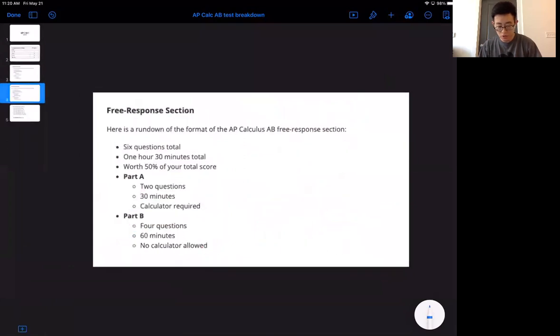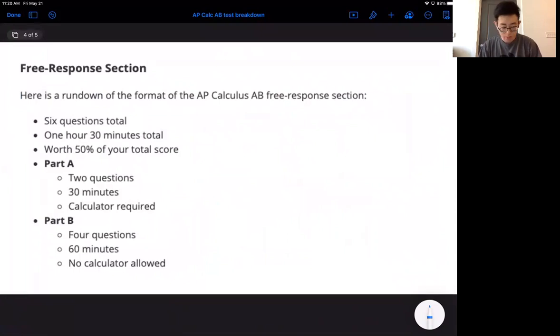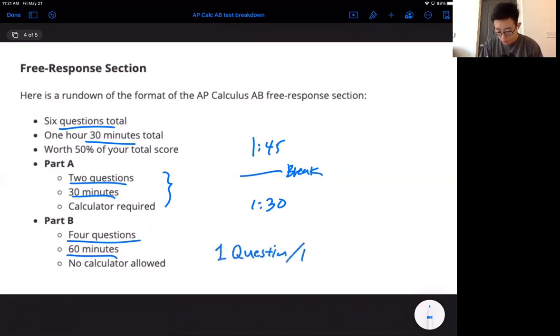Then you move into the open-ended sections, the free response questions, which is actually very crucial. Here's a rundown: six questions in total. That doesn't seem like much, but every question is very elaborate. One hour and 30 minutes long total. You'll be spending about four hours just like an SAT on this entire exam. Part A is two questions in 30 minutes, and calculator is required. They will give you decimals and crazy functions you really won't be able to do by hand. Then Part B is four questions in 60 minutes, no calculator allowed. Two questions for 30 minutes, four questions per 60 minutes, that means only one question per 15 minutes on average.